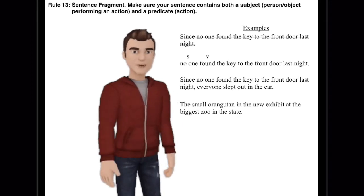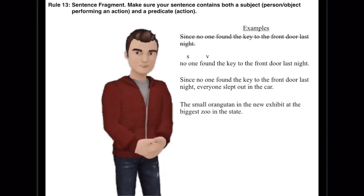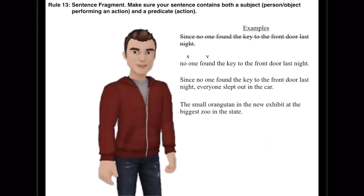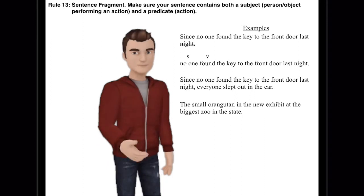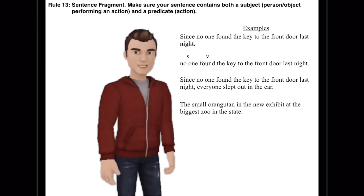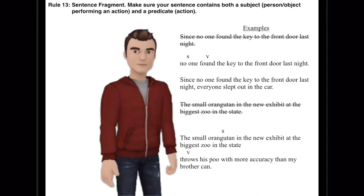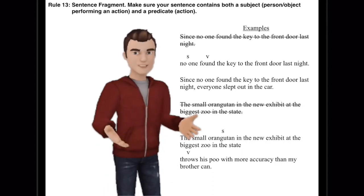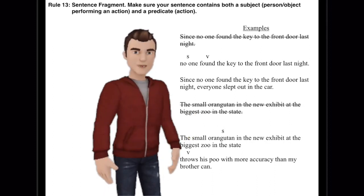Another example of a sentence fragment would be, the small orangutan in the new exhibit at the biggest zoo in the state. Now in that, there's a subject and there are a lot of prepositional phrases, but there's no verb. In order to finish it out, we need to add something like, throws his poo with more accuracy than my brother can.